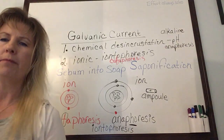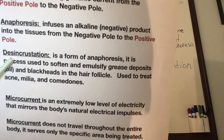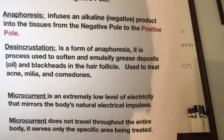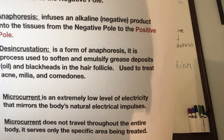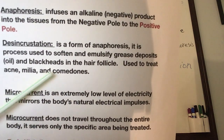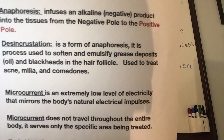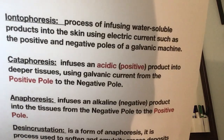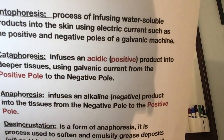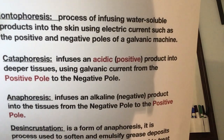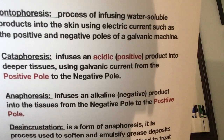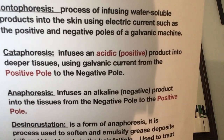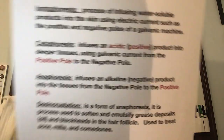Desincrustation is a form of anaphoresis — a process used to soften and emulsify grease deposits, oils, or blackheads in the follicle. We use it to treat acne, milia, and comedones. Iontophoresis is the process of infusing water-soluble products into the skin using electric current, such as the positive or negative poles of the galvanic machine.